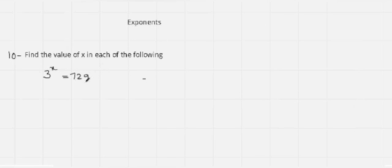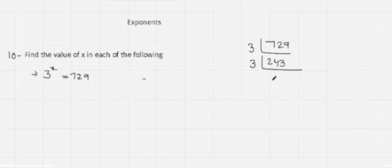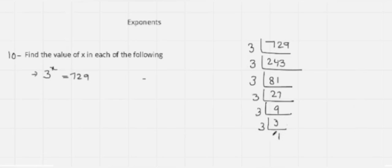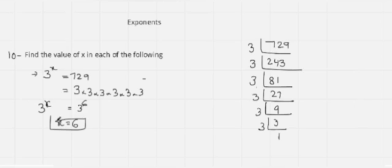Our next question: find the value of x — 3 power x equals 729. Here the base is 3, so I do factorization with 3 only. Dividing 729 repeatedly by 3: 729 → 243 → 81 → 27 → 9 → 3 → 1. So 3 appears 6 times. I write 3 to the power x equals 3 power 6. Since the base is the same, the exponents are equal. So the value of x is 6.